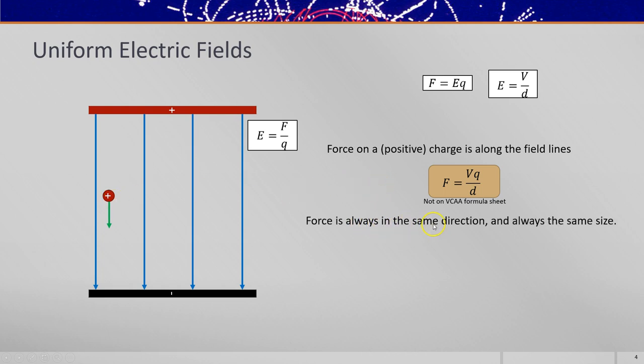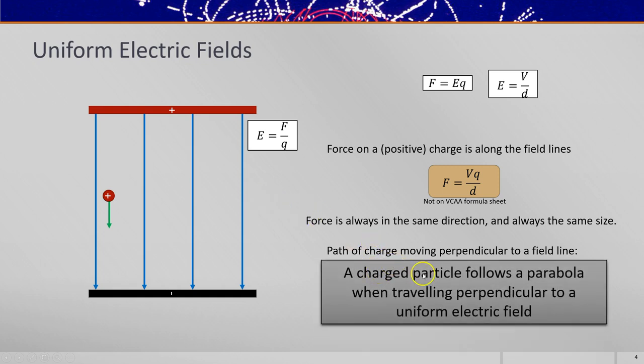Note that the force is always in the same direction, along the field lines, and it is always the same size. It doesn't depend on velocity. Now that means that the force is always perpendicular to the direction of travel if it's travelling through at right angles to the field. And that means that charged particles would follow a parabola if they travel perpendicular to a uniform electric field. So a parabolic path is the same path that a ball would take if it was thrown through a gravity field. And that's because the gravity field is considered to be almost uniform at the Earth's surface and the ball would travel at constant horizontal velocity but accelerate vertically.